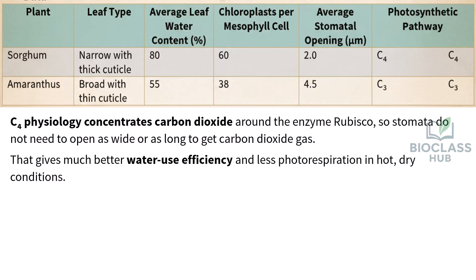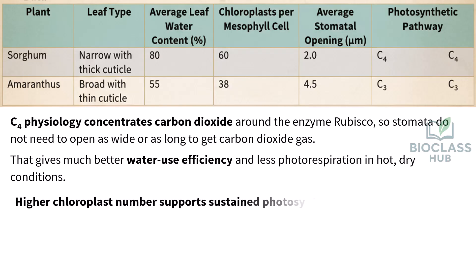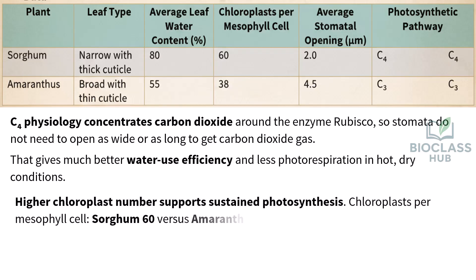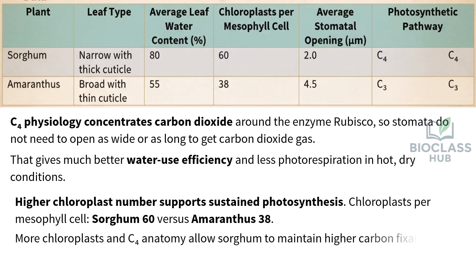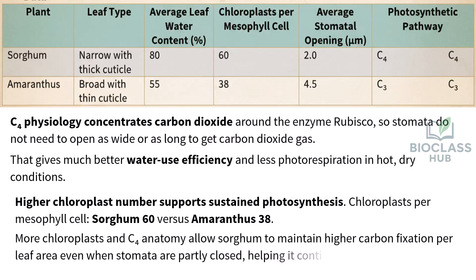Higher chloroplast number supports sustained photosynthesis: chloroplasts per mesophyll cell — sorghum 60 versus amaranthus 38. More chloroplasts and C4 anatomy allow sorghum to maintain higher carbon fixation per leaf area, even when stomata are partly closed, helping it continue growth during drought.